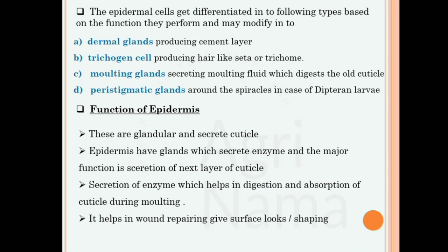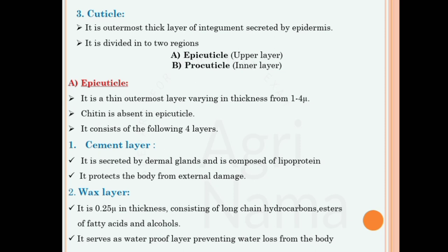The cuticle is the outermost layer of the insect body wall, divided into epicuticle and procuticle. Epicuticle is the upper outer layer; chitin is absent in it, and its thickness is 1 to 4 microns. It consists of four layers: cement layer, wax layer, inner cuticulin, and cuticulin layer. The cement layer is secreted by dermal glands, composed of lipoproteins, and protects the body from external damage. The wax layer is 0.25 micron thick, consisting of long-chain hydrocarbons and esters of fatty acids and alcohol; it serves as a waterproof layer preventing water loss from the body.